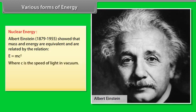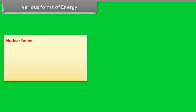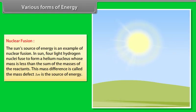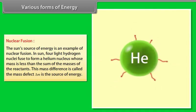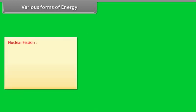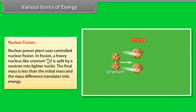Nuclear energy. Albert Einstein, 1879 to 1955, showed that mass and energy are equivalent and are related by the relation E equals mc square, where c is the speed of light in vacuum. There are two types of nuclear reactions: they are nuclear fusion and nuclear fission reactions. Nuclear fusion, the sun's source of energy: energy is an example of nuclear fusion. In sun, four light hydrogen nuclei fuse to form a helium nucleus whose mass is less than the sum of the masses of the reactants. This mass difference is called the mass defect. Delta m is the source of energy.